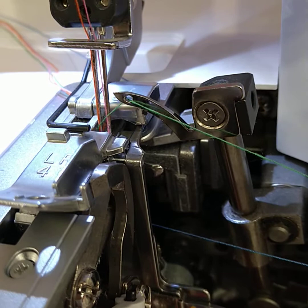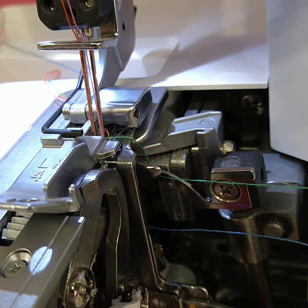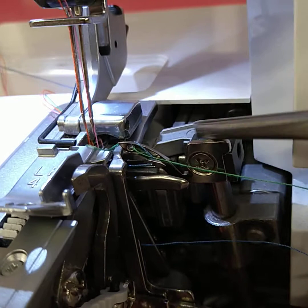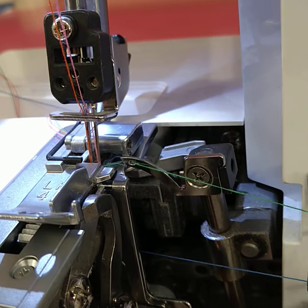So the upper looper is going across, it's retracting back across the front of the needles, it lowers. The lower looper, which is out of sight, comes across the back of the needles, picks up the needle threads. Then as the upper looper lifts, it picks the thread off the back of the lower looper. It goes up and across the front of the machine, across the needles and then the cycle repeats.